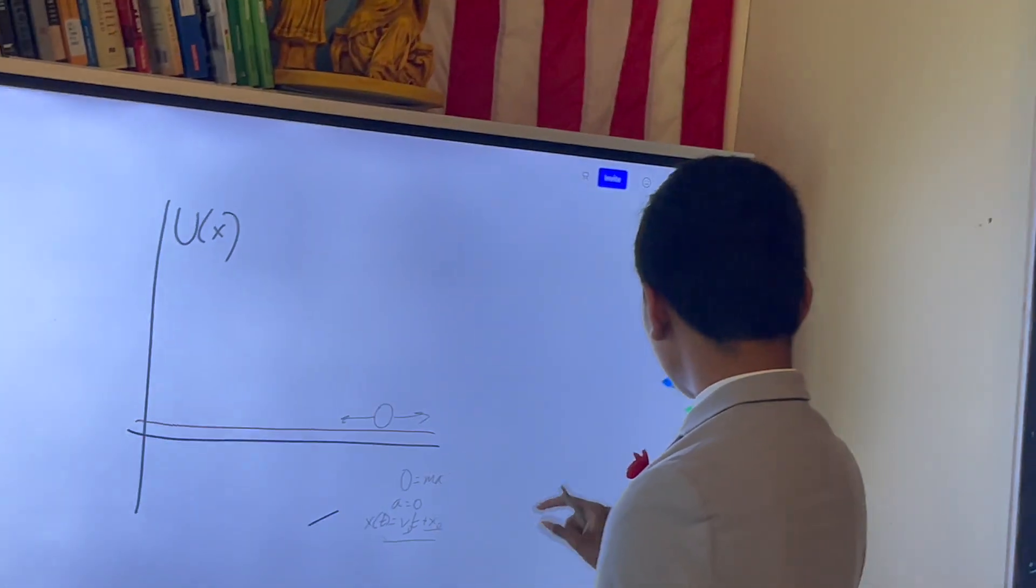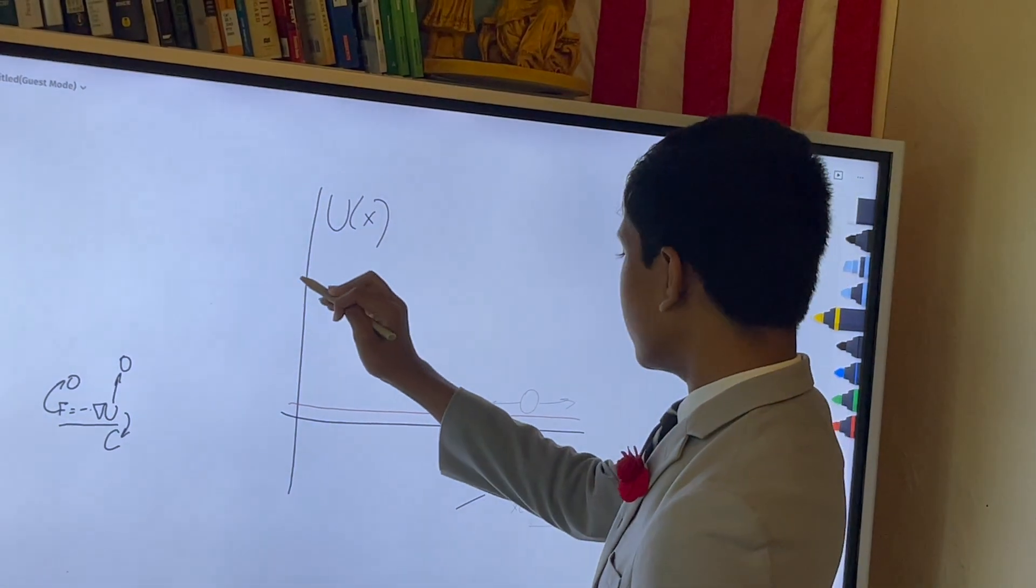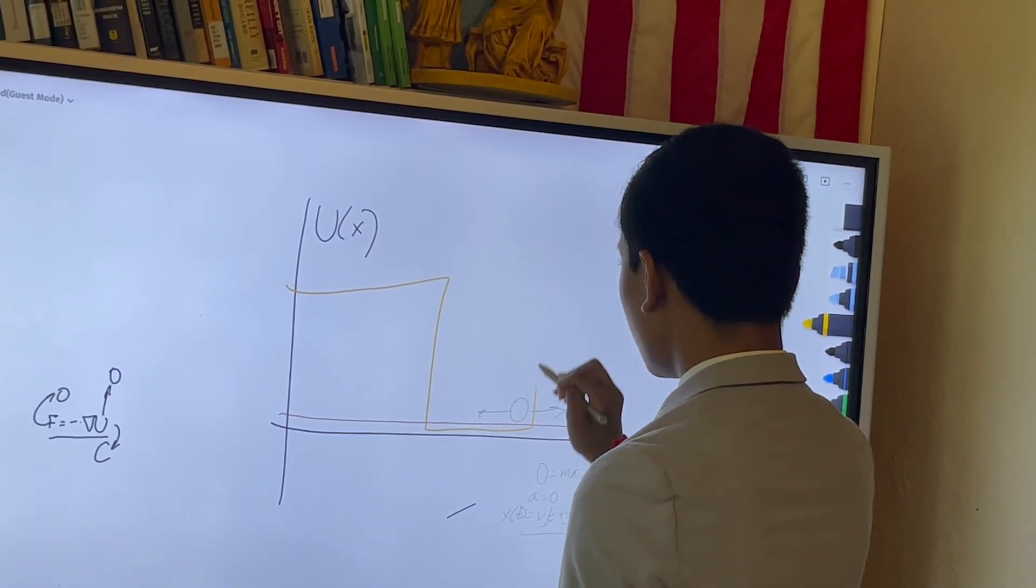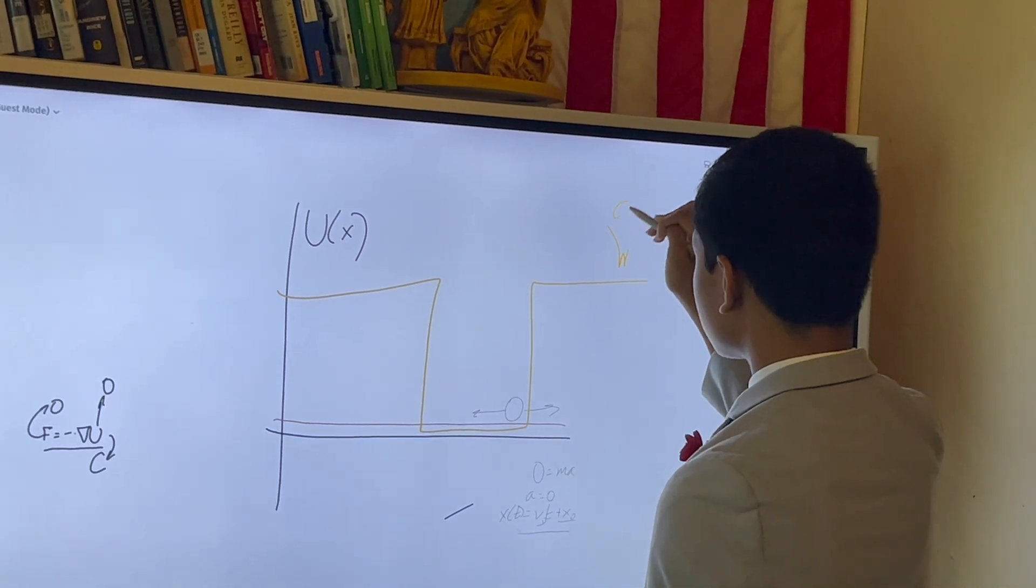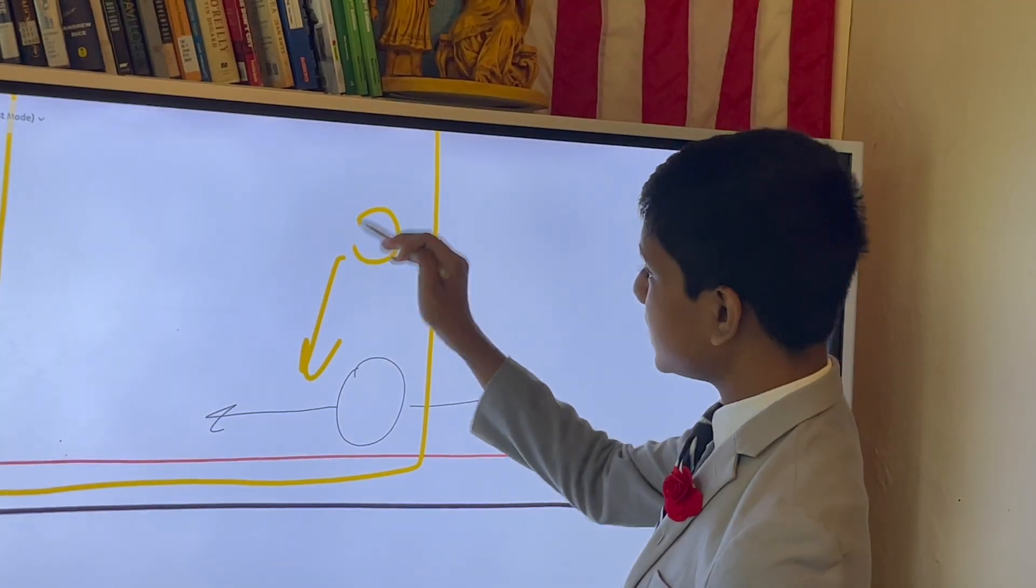A while ago, we covered the infinite square well, which looked something like this. Except these parts diverged off to infinity. And this part was exactly the same, zero.